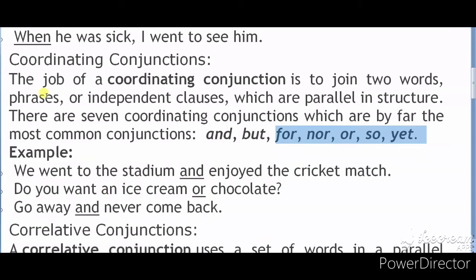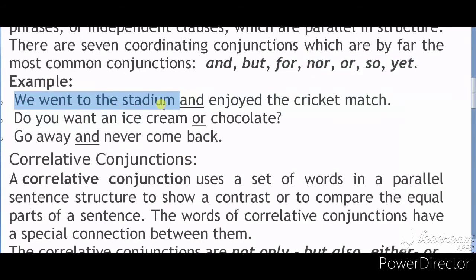The job of a coordinating conjunction is to join two words, phrases, or sentences. Here we join two independent sentences. For example: 'We went to the stadium and enjoyed the cricket match.' That second part is also independent. You can also say: 'Do you want an ice cream or chocolate?'